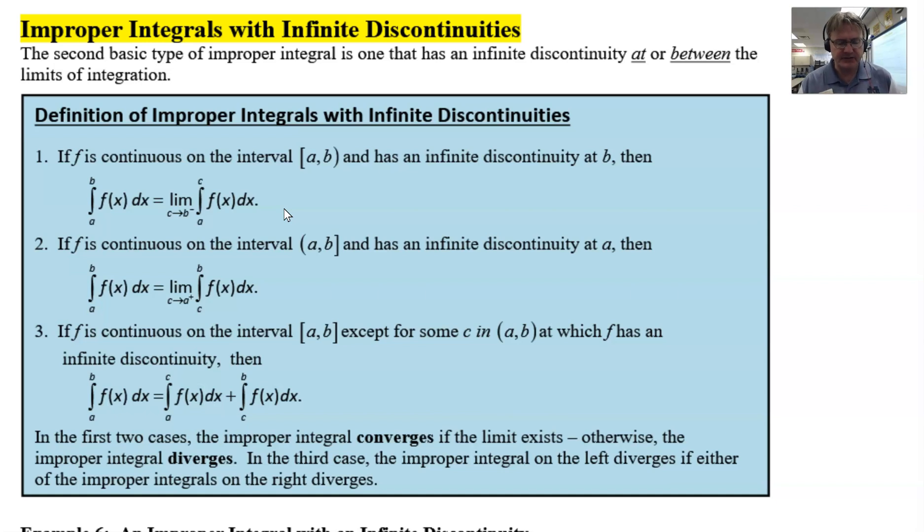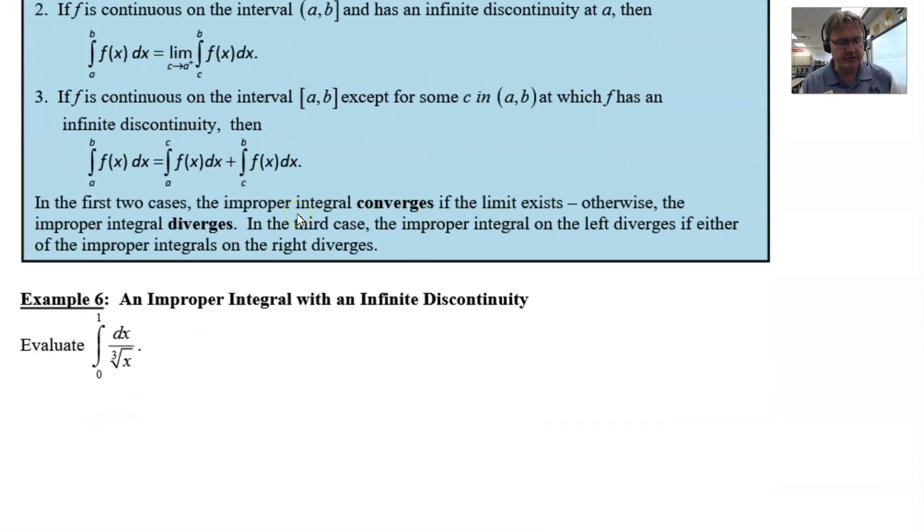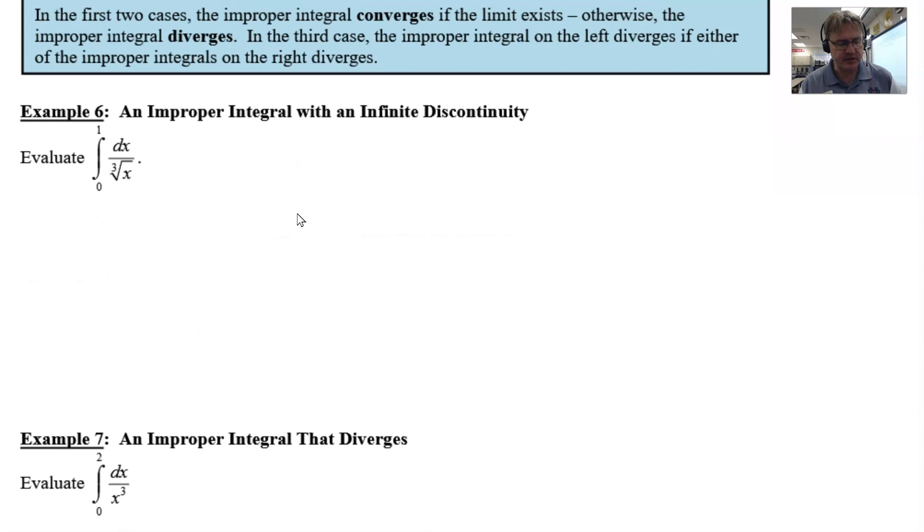If I scroll down to the problem that we're going to do, we already did example 6 in a previous video, but in this problem 7, we see that our function is 1 over x cubed, and our lower boundary 0, upper limit boundary is 2.